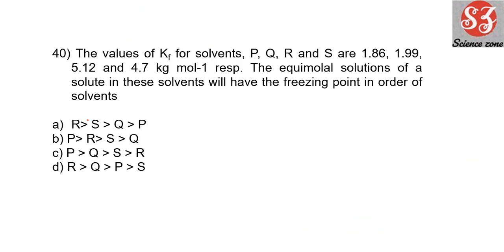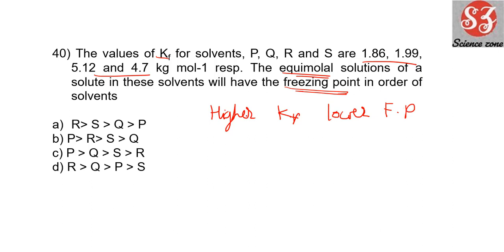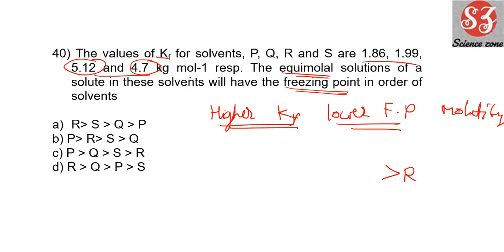Last question: 'The values of Kf for solvents P, Q, R, S are given. All solutions have the same molality. What is the order of their freezing points?' Since delta Tf = Kf × molality and molality is constant, higher Kf means lower freezing point. R has the highest Kf, so R has the lowest freezing point, followed by S, then Q, and P has the highest freezing point because it has the lowest Kf value. This sequence is option C. Answer is option C.